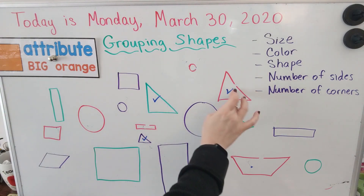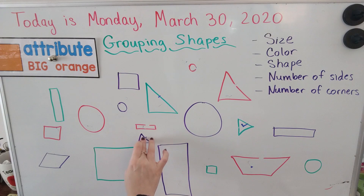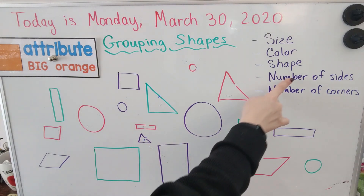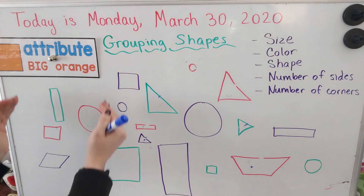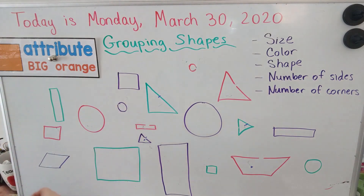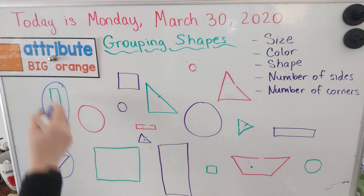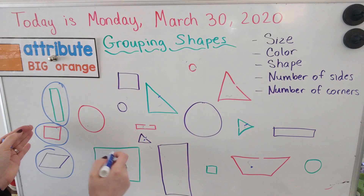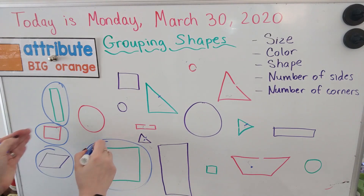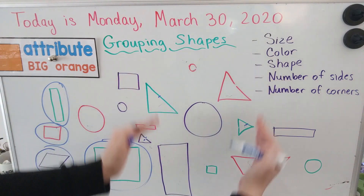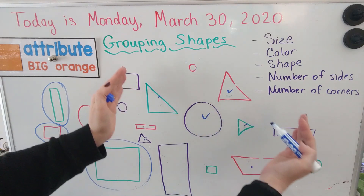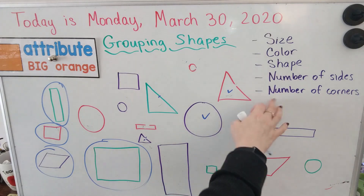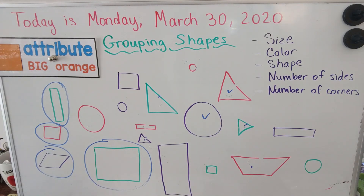Another way to sort and group our shapes is by the number of sides. For example, I could say I want to make a group where all of the shapes have only four sides. So I would identify which ones have four sides and put them in that group. All of the shapes that don't have four sides would go into another group — for example, the circles and the triangles would go into another group.